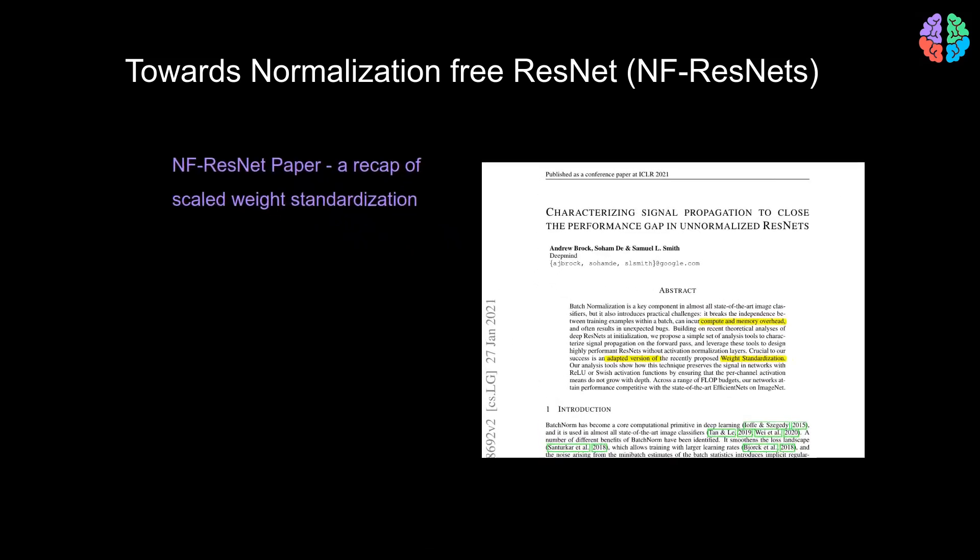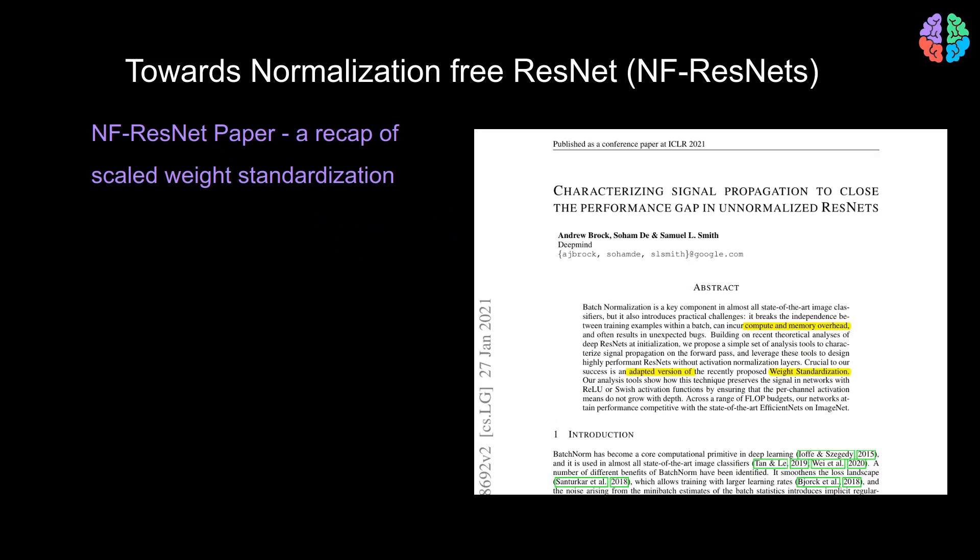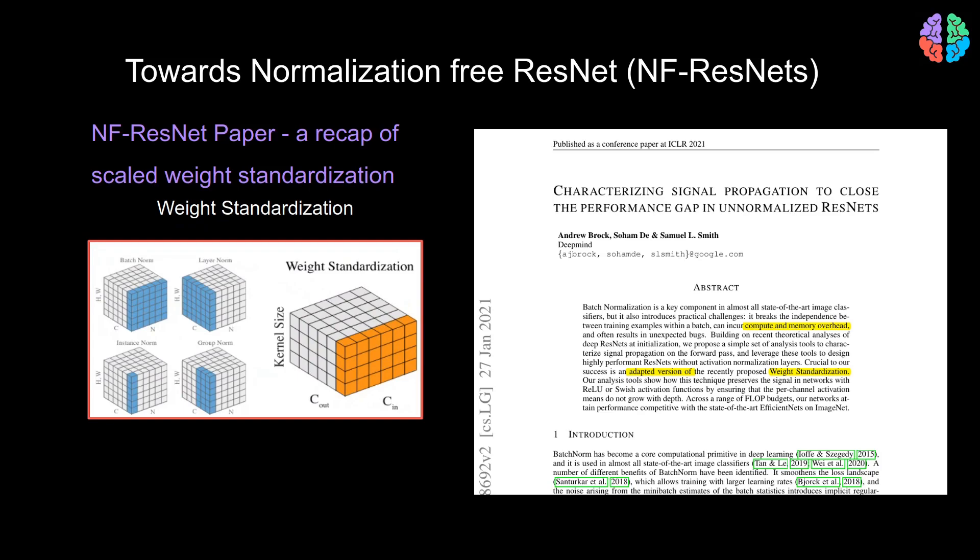The main contribution of NF-ResNets paper is the scaled weight standardization. So let's look at weight standardization first and then make it scaled weight standardization. Weight standardization is when you compute the mean and standard deviation of the weights itself instead of the input data. As you can see in the figure, the normalization resembles that of batch norm, but because we want to get rid of the batch norm layer, we standardize the weight of the layer to compute W-hat. So if we consider a tensor with I, J as the dimension corresponding to C and N in batch norm, then W-hat is computed by simply subtracting the mean of the ith layer and dividing by the standard deviation of the ith layer.